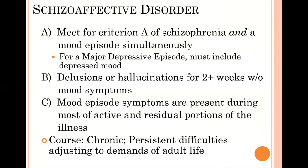For schizoaffective disorder, the individual must meet criterion A of schizophrenia — delusions, hallucinations, disorganized behavior, and possibly negative symptoms — and have a mood episode at the exact same time, either a full-blown manic or depressive episode. In addition, you must identify a period of at least two weeks where they had delusions and hallucinations without a mood episode occurring simultaneously.